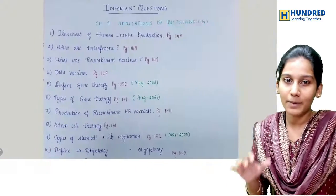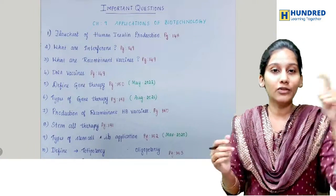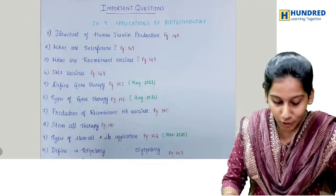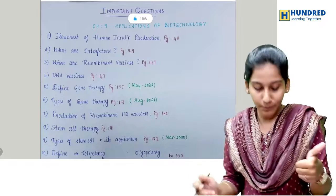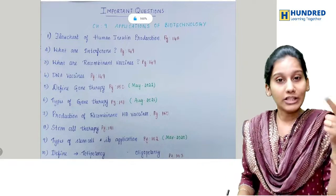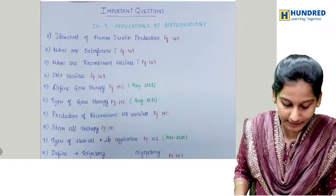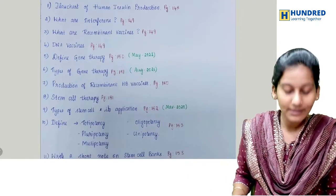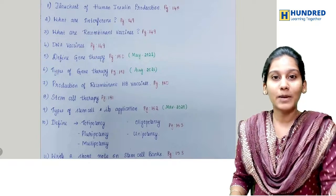So what are the important questions? Very importantly, page number one: floor chart for the human insulin production, interference, recombinant vaccines, DNA vaccines, gene therapy and types of gene therapy.